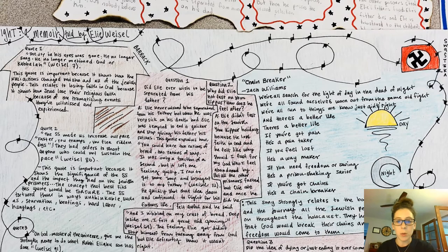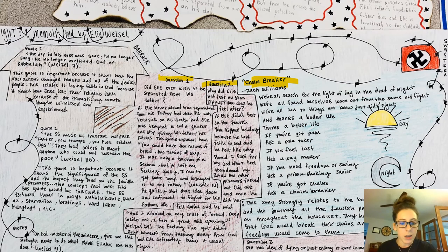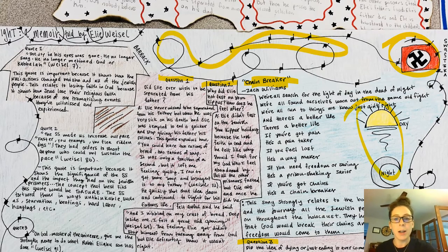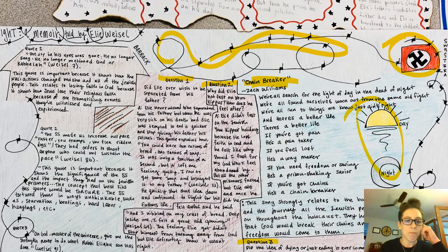Here are a few more examples. This person chose a song and related 'Night' to 'Chain Breaker' by Zach Williams. We have question one, two, and three — question three is down at the bottom. There's an image, another image, and I love the barbed wire as image number three — that's a really powerful image for them to include.